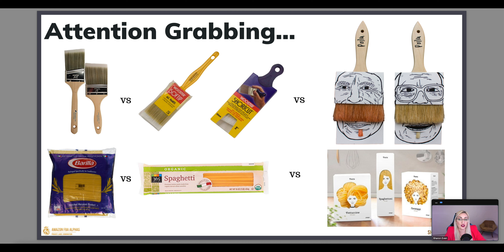Here's what differentiated packaging can look like. I love this example — you can see what a regular brush looks like, and then this really awesome brand, I think it's Poilu, where they've basically turned the packaging into a man's face with the brush hair looking like a goatee or mustache. It really really stands out, whether in a physical store or online. It could be the exact same brush and quality as everyone else's, but the packaging makes it stand out.